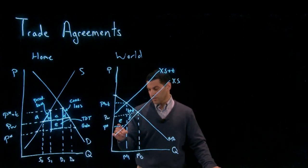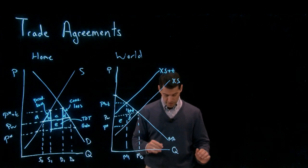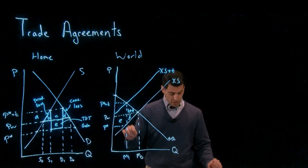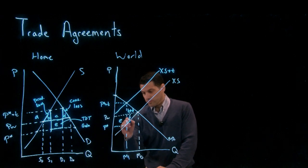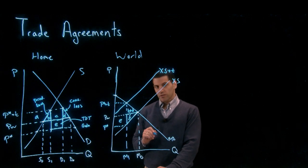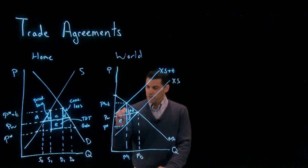But remember, e comes at the expense of the foreign country. In addition to e, the foreign country also loses f — f is the part of the global deadweight loss that comes at the expense of foreign producers. So the total global deadweight loss is b plus d plus f.